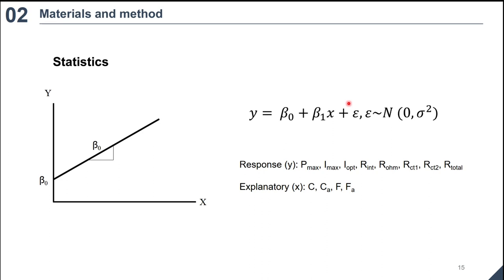To investigate the effect of each explanatory variable on the response of our interest, we used linear model. In this analysis method, if the p-value is less than 0.05, it is considered to be significant. 8 kinds of response and 4 kinds of explanatory were selected and analyzed. Max is maximum power density, I_max is maximum current density, I_opt is optimal current density, R_N is internal resistance, R_ohm is ohmic resistance, R_CT1 is charge transfer resistance 1, R_CT2 is charge transfer resistance 2 and R_total is total resistance. C is closest distance from a core rod to the cathode, CA is average distance from a core rod to the cathode, F is closest distance from carbon fibers to the cathode, and FA is average distance from carbon fibers to the cathode.